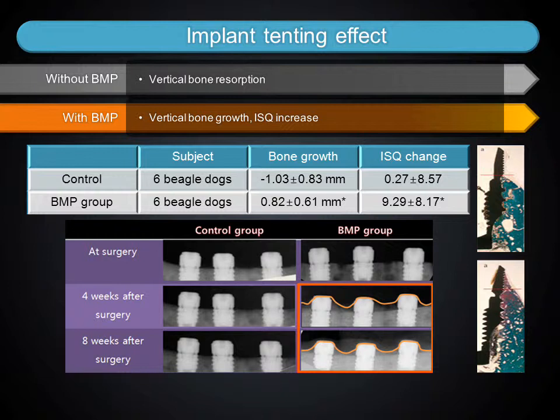In histological findings, new bone was regenerated up to the top of the fixture. As a result, dental implants and mini screws coated with RHBMP2 solution could increase bone height and bone width when used with bone graft.